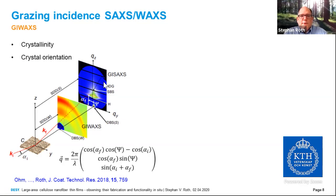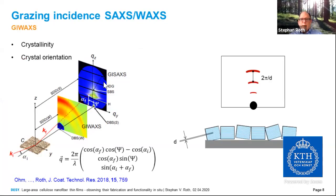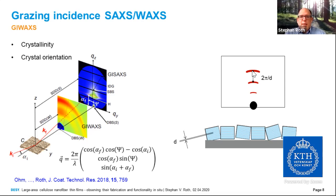We can observe different features of the sample depending on the regime. In the GIWAXS position, we can observe the crystallinity and crystal orientation. The crystallites deposited by spray coating have lattice planes indicated with spacing d. In reciprocal space, we observe arcs: their position, with distance 2π/d in the simplest case, gives a measure of the lattice planes and crystallinity. Disorder — tilted crystals and lattice planes — gives rise to broadening of the Bragg spots. From this measurement you can deduce the orientation of your crystallites and the lattice plane spacing.